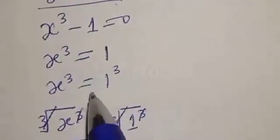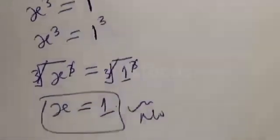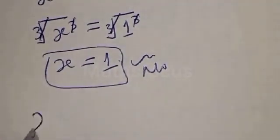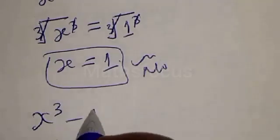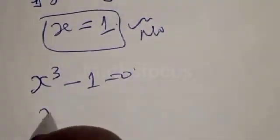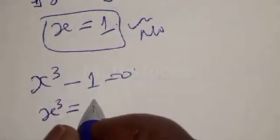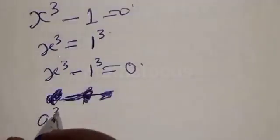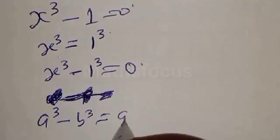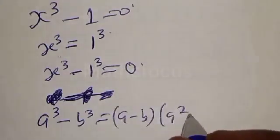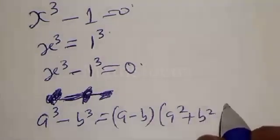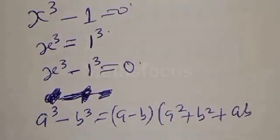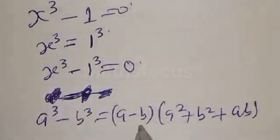Let's try and find other values of X. We have X raised to power 3 minus 1 equal to 0, which means X cubed minus 1 cubed equal to 0. Now, using the identity A cubed minus B cubed equals A minus B times A squared plus B squared plus AB, where A equals X and B equals 1.